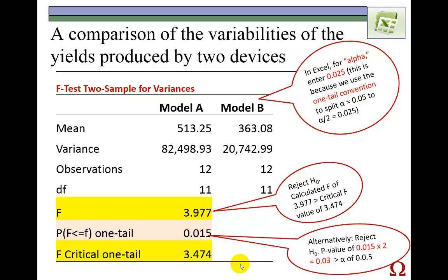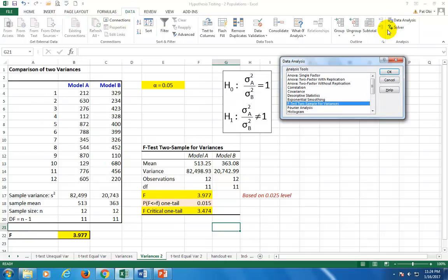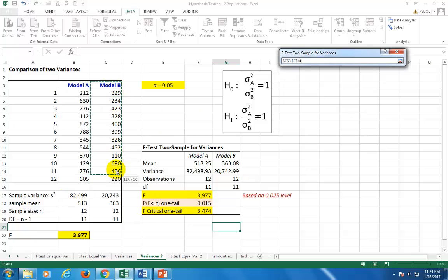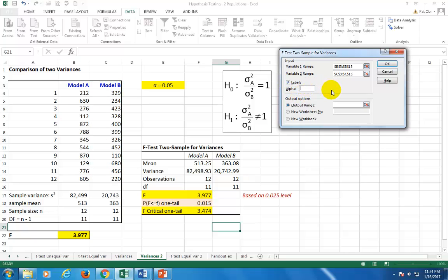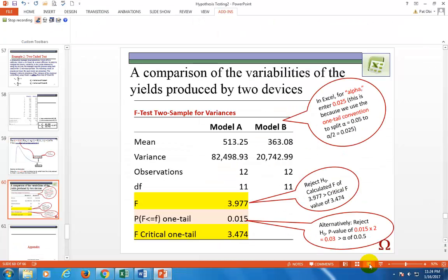And we can use Excel to do this. Let's go there. Here's our data set. Data. Data analysis. F-test. Two sample for variances. Pay attention now to the variable with the larger sample variance. So, we're going there. Well, let's clear that again. All right. While cursor is blinking there, we highlight model A first because it has the larger variance. Click here. Highlight model B. Check here for labels and for alpha, one tail convention, 0.025. One tail convention at the alpha level of 0.05. Click here for output and then click here to dump it. All right. So, here's our output which I copied over to our PowerPoint presentation that you see right here.